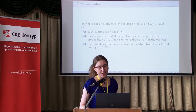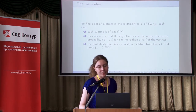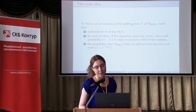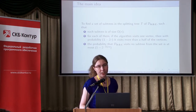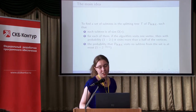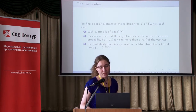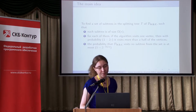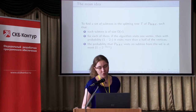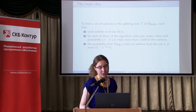The main idea for the proof was to find some set of subtrees in the splitting tree of the algorithm such that each subtree is quite big, and for each of the trees the algorithm with high probability visits more than half of the vertices. We also noticed that the probability that no such tree is visited is very small, almost negligible.